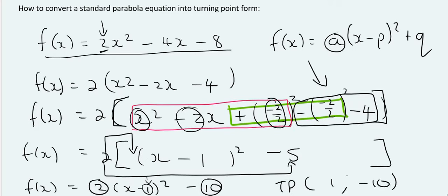And that's it. Of course, you could have found the turning point by using x equals to minus b over 2a, and then plugging that answer into the original equation. But, we also need to know how to do it using this method, because you do get marks for that in the exam.